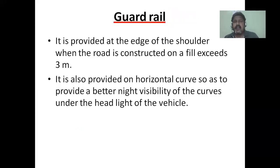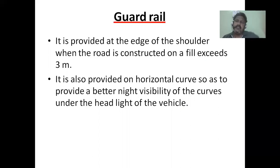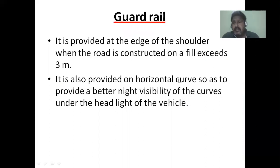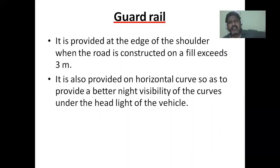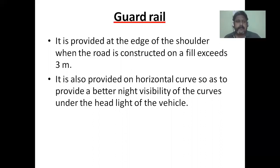Guard rail: it is provided at the edge of the shoulder when the road is constructed on fill exceeding 3 meters, to prevent vehicles from going over the edge. It is also provided on horizontal curves, because centrifugal force tends to drive vehicles to the outside. Although super elevation is provided, at high speeds a vehicle may not turn safely. Guard rails are also provided on horizontal curves to give better night visibility of the curves under vehicle headlights.